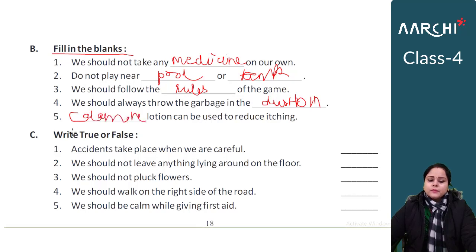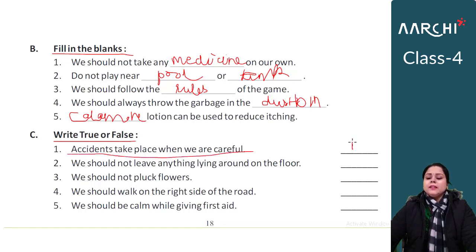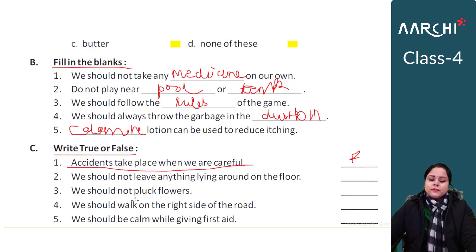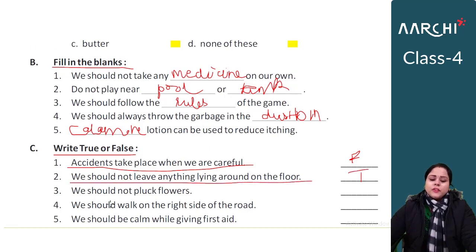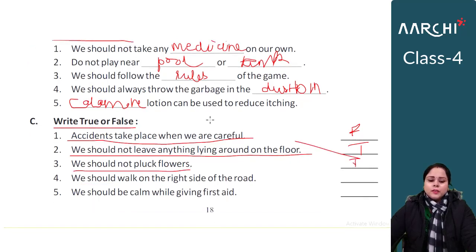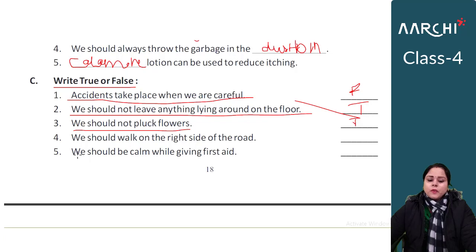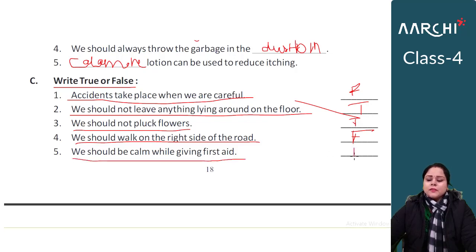True or False. Question 1: Accidents take place when we are careful — False, accidents happen when we are careless. Question 2: We should not leave anything lying on the floor — True. Question 3: We should not pluck flowers — True. Question 4: We should walk on the right side of the road — False. Question 5: We should be calm while giving first aid — True.